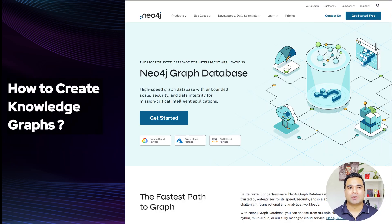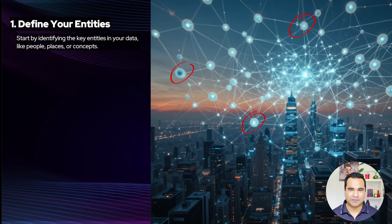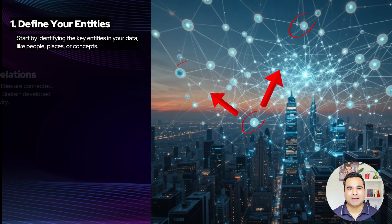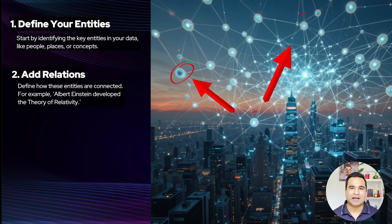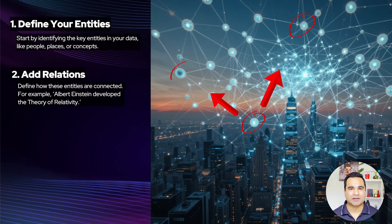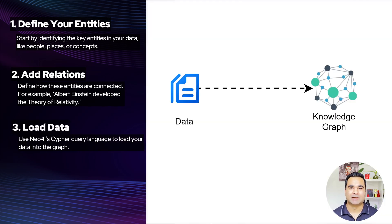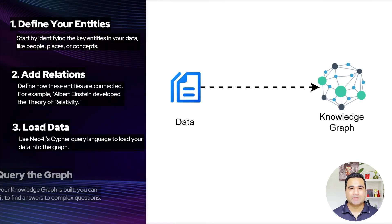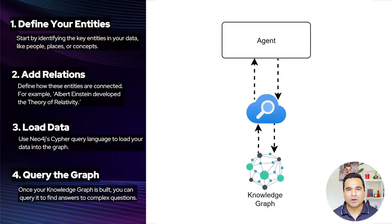You might be wondering how do you even create a knowledge graph. One of the most popular tools for this is Neo4j, a graph database that makes it easy to build and query knowledge graphs. Here's a quick overview of how it works. First, define your entities — identify the key entities in your data, like people, places, or concepts. Second, add relationships — define how these entities are connected, for example, Albert Einstein developed the theory of relativity. Third, load data — use Neo4j's Cypher query language to load your data into the graph. Finally, query the graph — once your knowledge graph is built, you can query it to find answers to complex questions.